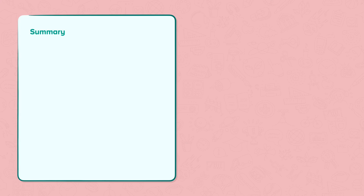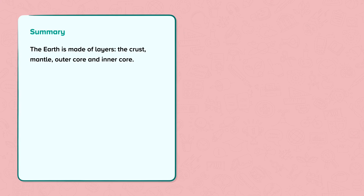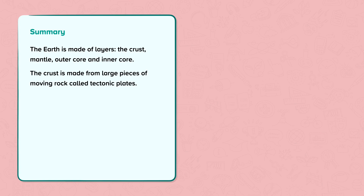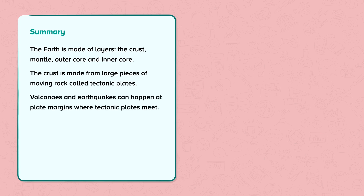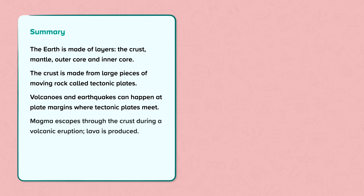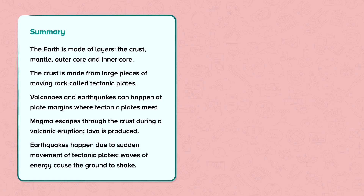Let's look at a summary. The Earth is made of layers: the crust, the mantle, the outer core, and the inner core. The crust is made from large pieces of moving rock called tectonic plates. Volcanoes and earthquakes can happen at plate margins where the tectonic plates meet. Magma escapes through the crust during a volcanic eruption and lava is produced. Earthquakes happen due to sudden movement of tectonic plates, and waves of energy cause the ground to shake.